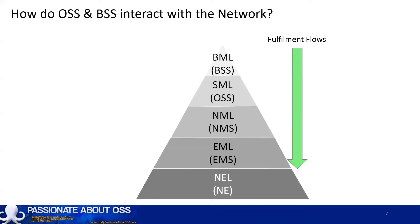As a generalization, orders or fulfillment flows go down through the stack from customer to the network, where orders become commands that are pushed into the network. Faults or assurance flows tend to go up through the stack, originating in the network and being pushed up to the OSS, and possibly further by way of notifications to customers.